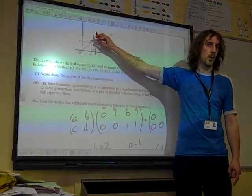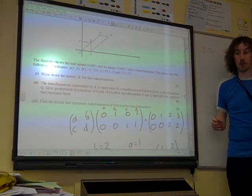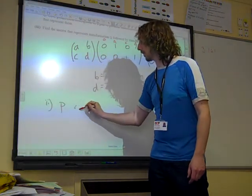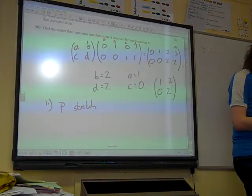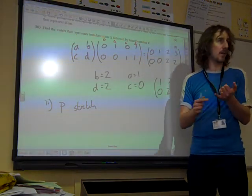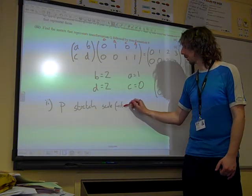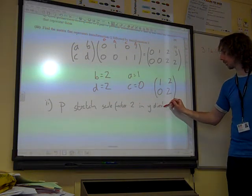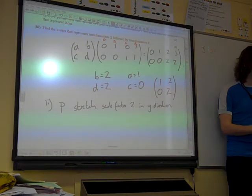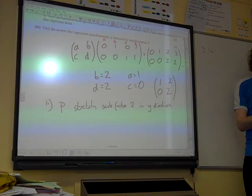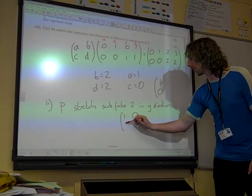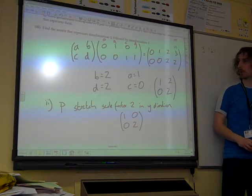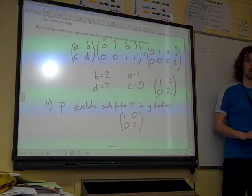That was my instinct to do it in that order. So the first thing, I'm going to say that my first one, P, is a stretch. P is going to be a stretch. And we describe a stretch by its scale factor and the direction. So it's scale factor 2 in the y direction. And that would be represented by the matrix 1, 0, 0, 2, wouldn't it? And I think that's one of the ones that we remember. But we can check it out as well. We could do the multiplying the unit square if we wanted to check how that gives us.